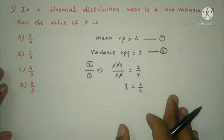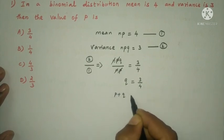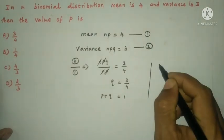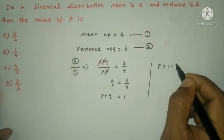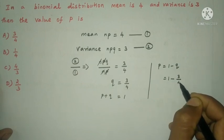In binomial distribution, p plus q equal to 1. Therefore, p equal to 1 minus q, that is 1 minus 3 by 4.